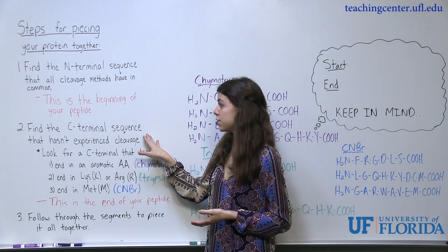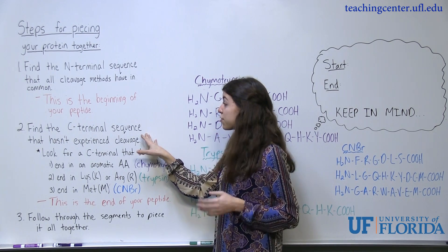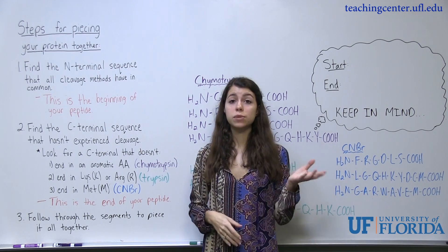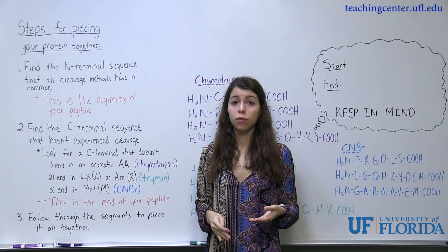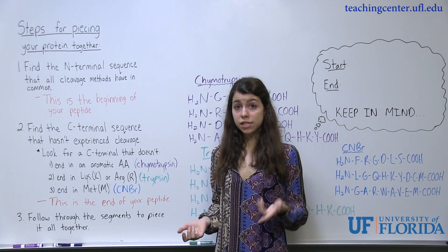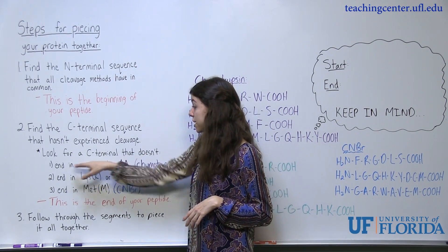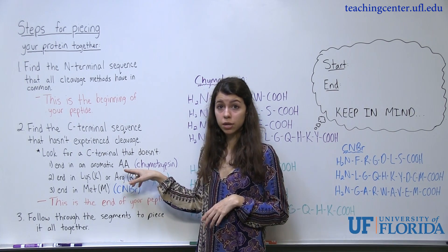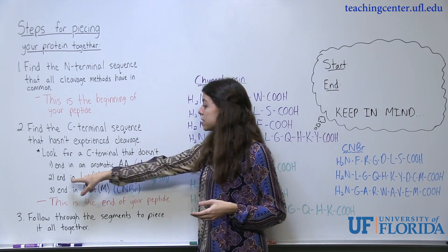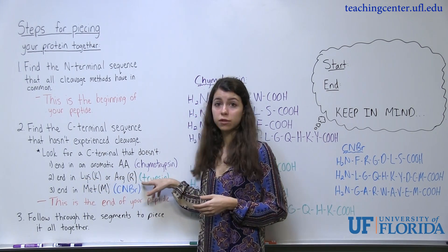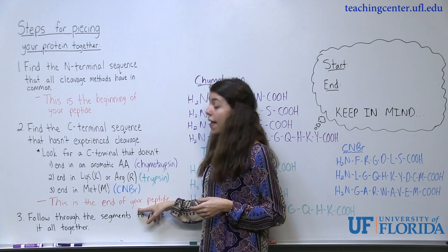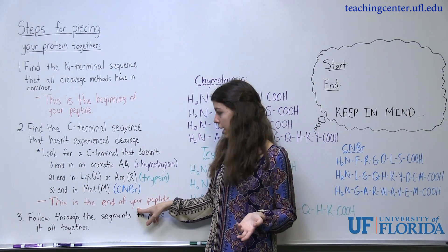Then you're going to find your end — the C-terminal sequence that hasn't experienced cleavage, based on the mechanism of whatever your cleaver is. For example, you're going to look for a C-terminal sequence that doesn't end in an aromatic amino acid for chymotrypsin, doesn't end in lysine or arginine for trypsin, and doesn't end in methionine for cyanogen bromide. This is going to be the end of your peptide.